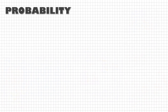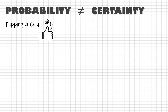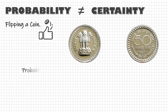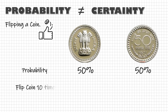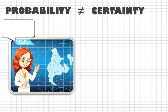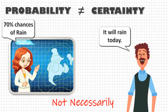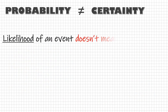You must understand that probability is very different from certainty. You already know that in flipping a coin the probability of getting heads or tails is 50 percent. Does that mean if I flip a coin 10 times I will get five heads and five tails? Not necessarily. Again, if there are 70 percent chances of rain, that leaves only 30 percent chance of not raining — will it rain? Not necessarily. The likelihood of an event does not mean it will happen.